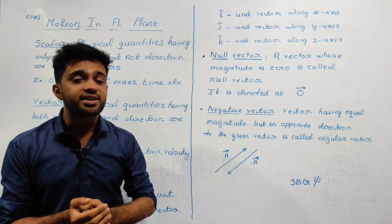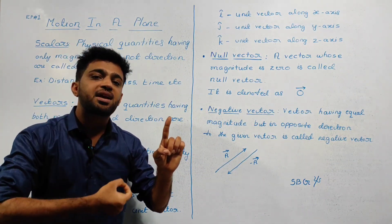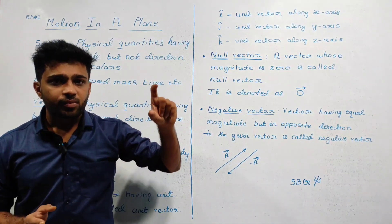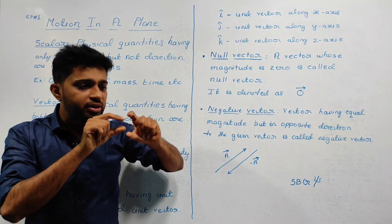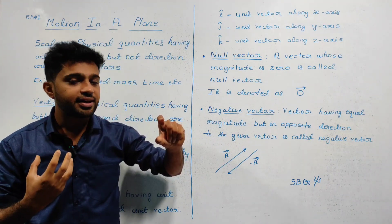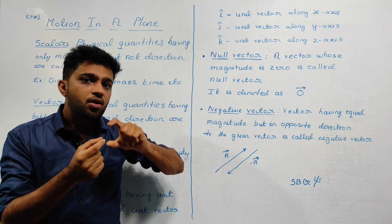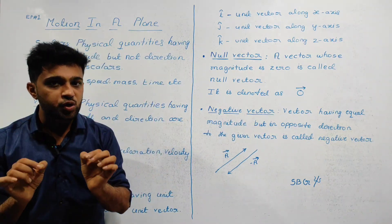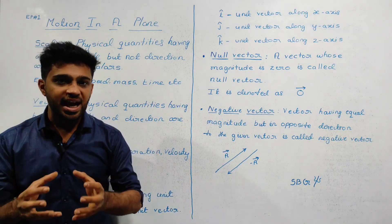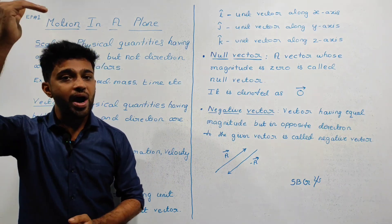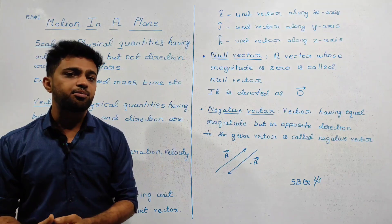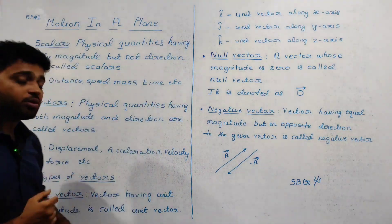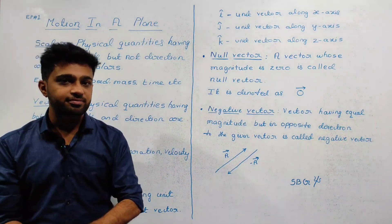The magnitude of a unit vector is 1. We use unit vectors to denote direction. For example, the unit vector along the x-axis is equal to i-cap, meaning 1 unit along the x-axis. If we write 10j-cap, that means 10 units along the y-axis. If we write 20k-cap, that means 20 units along the z-axis. That is how we use unit vectors to denote direction.